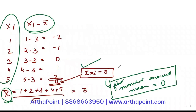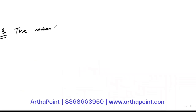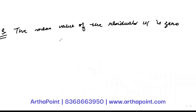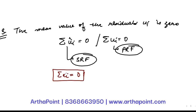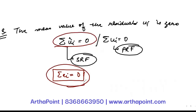Let us go to the third property. Property number 3: the mean value of the residuals ûi is 0. So summation ûi equals 0 — this is for the population regression function. For the sample regression function, summation ûi equals 0 as well. Some books write the sample counterpart as summation ei equals 0, where ei are the error terms in the sample and ui are the error terms in the population. Either form works.